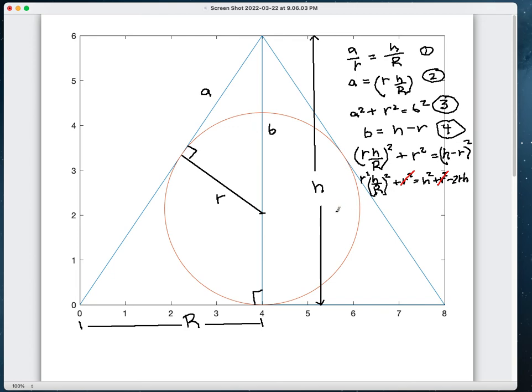And I can simplify this equation to be R squared H over R squared plus 2HR minus H squared equals 0. And once again, I have a quadratic equation that can easily be solved for R.